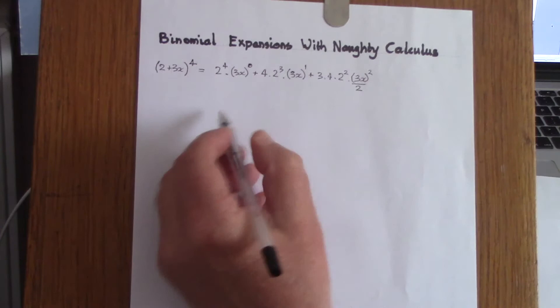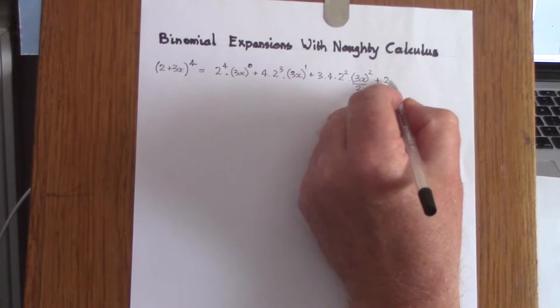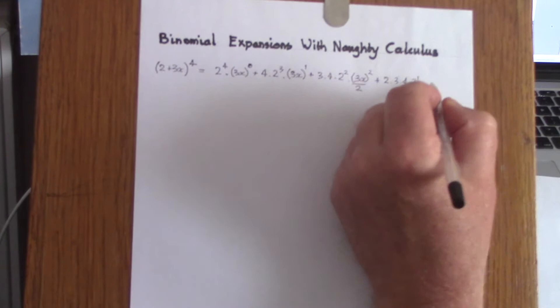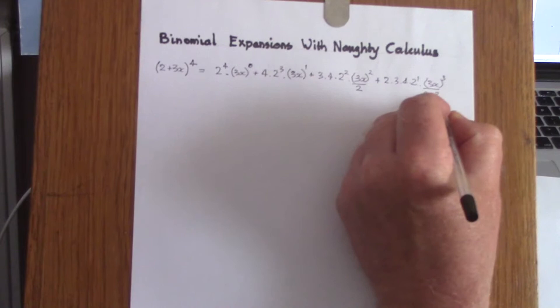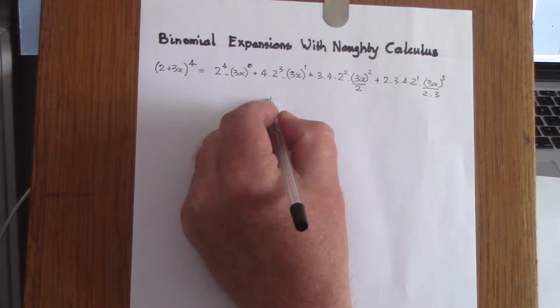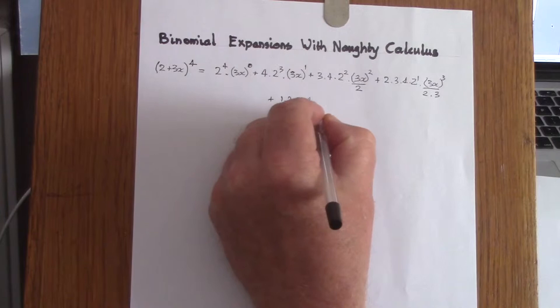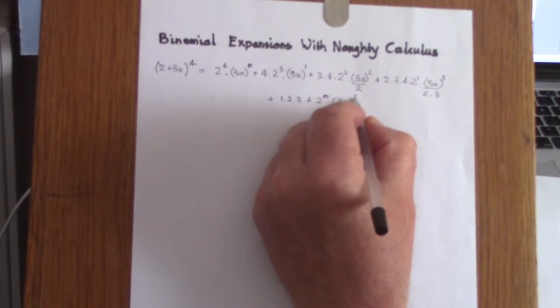We differentiate again to get 2 times 3 times 4 times 2 to the power of 1, and integrate to get 3x to the power of 2 over 2 times 3. One more step: differentiating gives 1 times 2 times 3 times 4 times 2 to the power of 0, and integrating gives 3x to the power of 4 over 2 times 3 times 4.